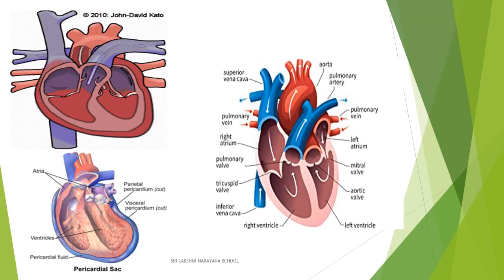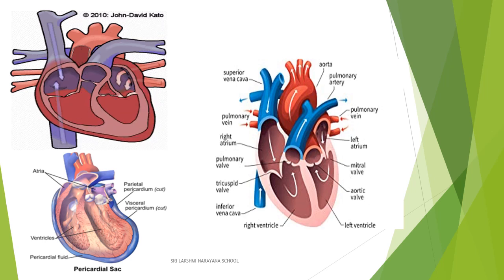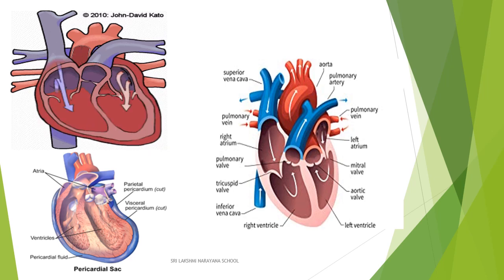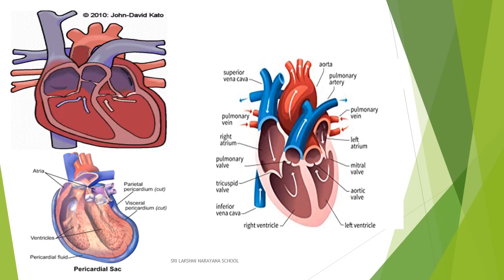Now let's look at the heart. The heart is a muscular organ, conical in shape. It is placed inside the ribcage between two lungs. A heart is divided into four chambers: two upper auricles and two lower ventricles. The right side of the heart receives deoxygenated blood from different parts of the body and pumps it to the lungs. The left side of the heart receives oxygenated blood from the lungs and pumps it to the other parts of our body.